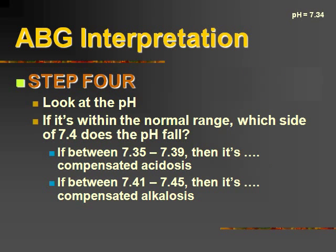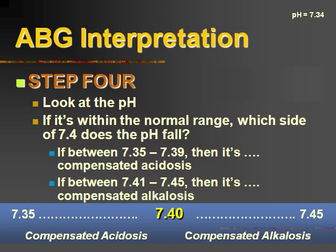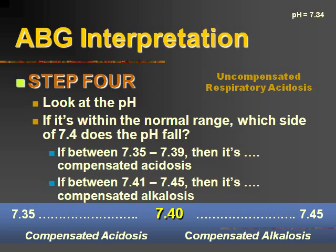And then lastly, step four, we're going to look at the pH one more time and see if it's within the normal range to determine if it's compensated or uncompensated. In this case, it's 7.34, which falls on the left side of 7.35, so this is going to be uncompensated. So this patient has an uncompensated respiratory acidosis.